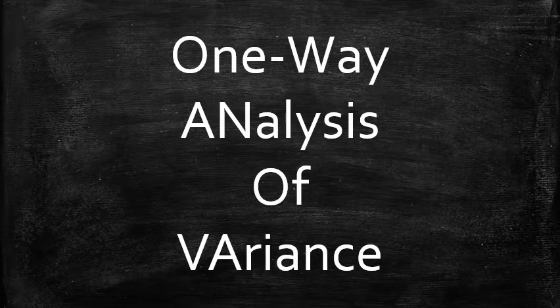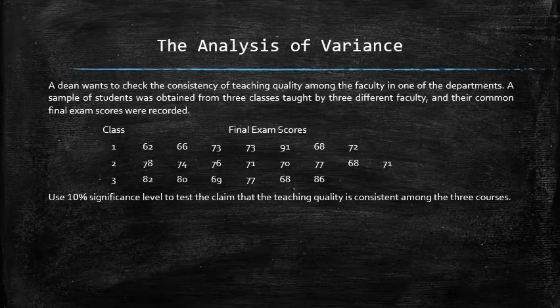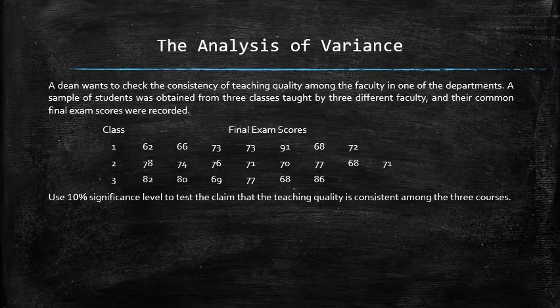Next, I will show how to apply the one-way analysis of variance procedure to test a statistical claim about more than two population means. Consider the following example: a dean wants to check the consistency of teaching quality among the faculty in one of the departments. A sample of students was obtained from three classes taught by three different faculty, and their common final exam scores were recorded. Use a 10% significance level to test the claim that the teaching quality is consistent among the three courses.